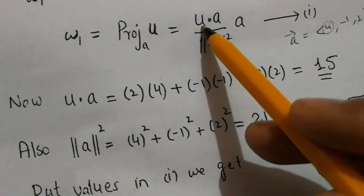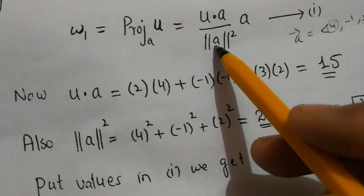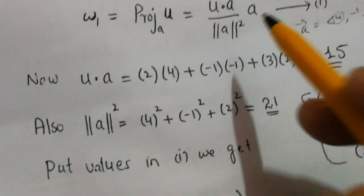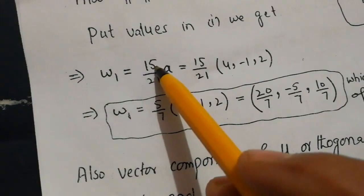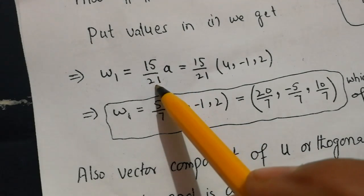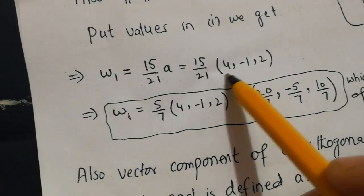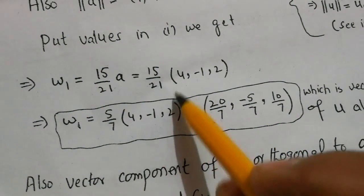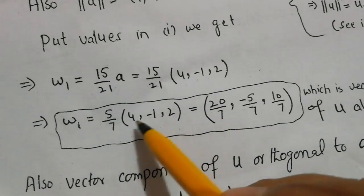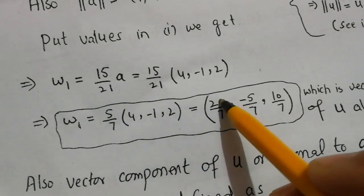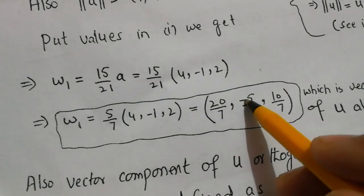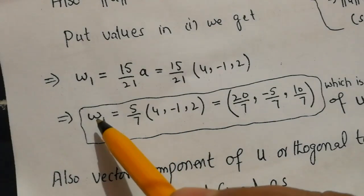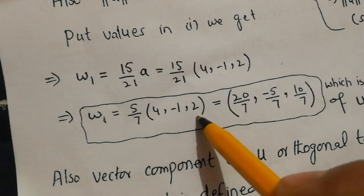Now we replace these values in equation 1: instead of u · a we write 15, instead of ||a||² we write 21, and we insert the value of a. So w1 = (15/21) · a. Simplifying gives 5/7, so w1 = 5/7 × [4, -1, 2] = [20/7, -5/7, 10/7]. This is the component of u in the direction of a.